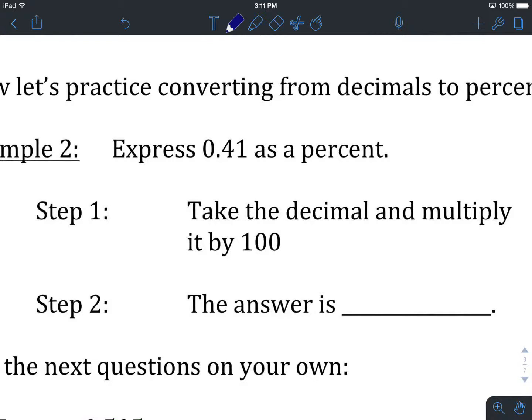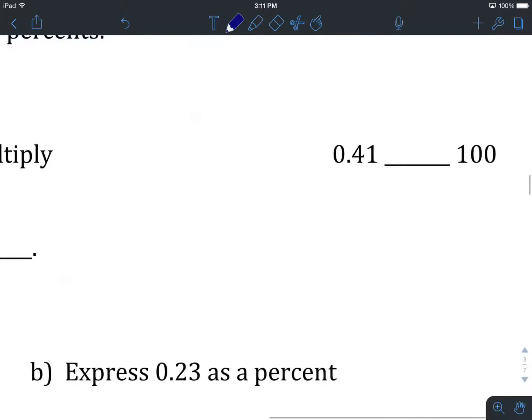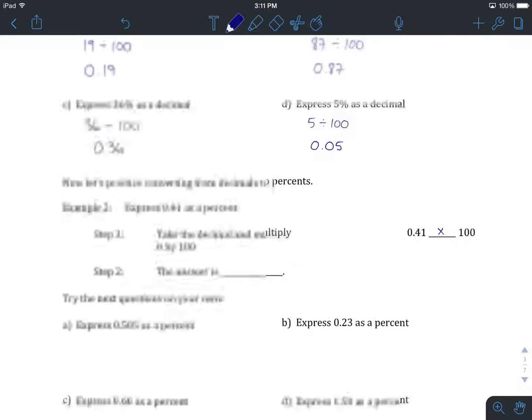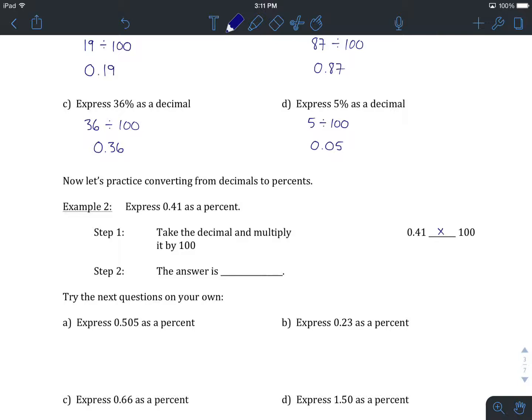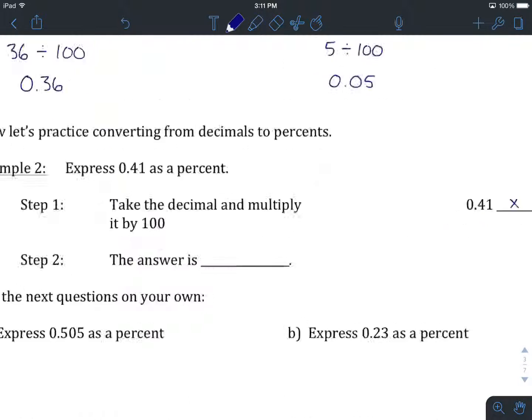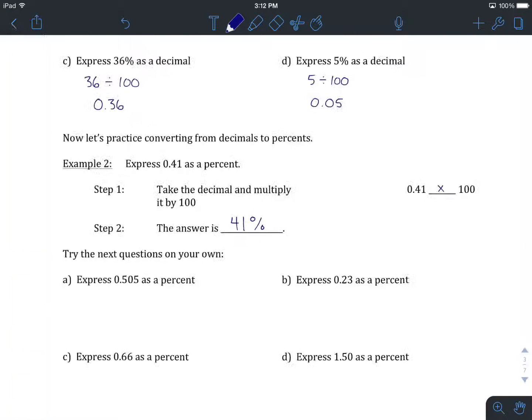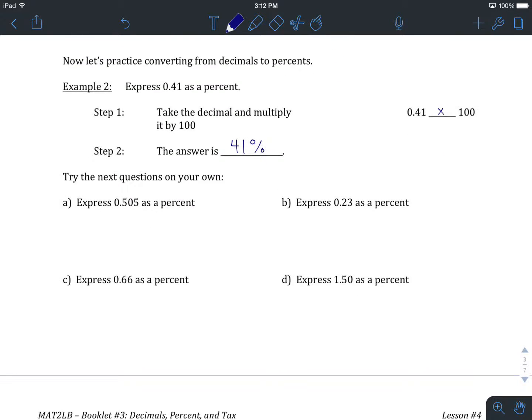First thing we do is we take the decimal, 0.41, and we multiply it by 100, which is the opposite operation to what we were doing earlier, which was dividing by 100. So when we type this into our calculator, 0.41 times 100, the answer we get is 41, and we can't forget the right notation, which is the percent sign. So 41%. So if we're trying to go from a decimal to a percentage, we multiply by 100 to gain back that idea that we're talking about some portion of 100 parts.